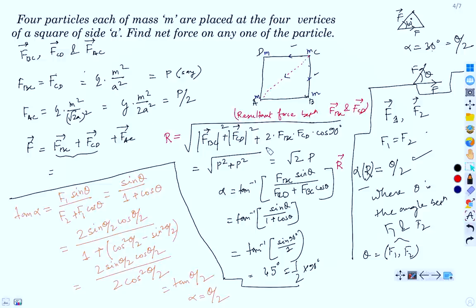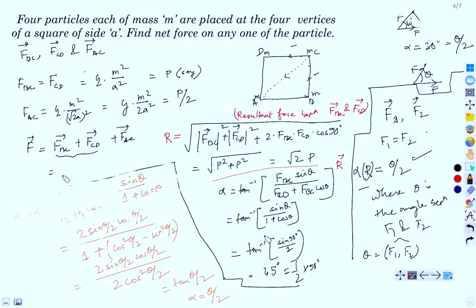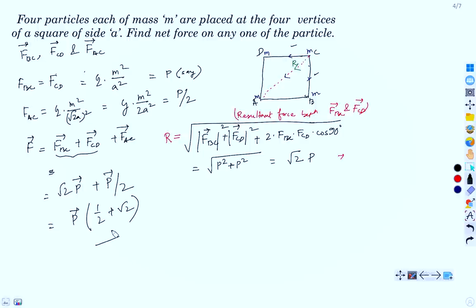So you don't need to repeat this computation again and again. The total net force at vertex C of the square is √2·P (from FBC and FCD along diagonal) plus P/2 (from FAC along AC). Taking P common: F_net = (√2 + ½)·P, directed along AC. The value of P is GM²/A².